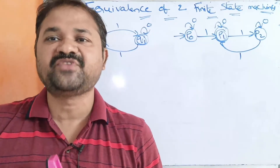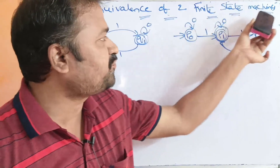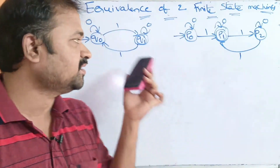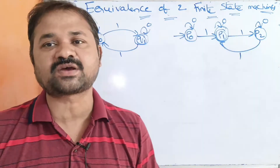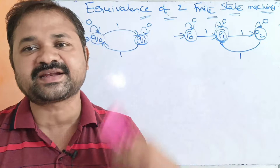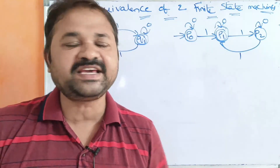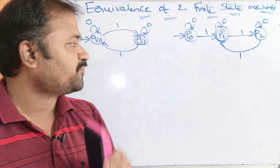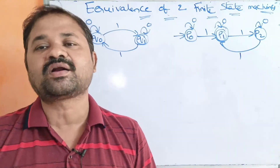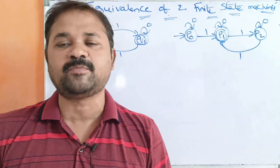In this video, we are going to discuss about equivalence of two finite state machines. We have to check whether two finite state machines are equal or not, whether they may be either DFAs or NFAs. So let us see whether these two finite automatas are equivalent or not. In order to solve this problem,